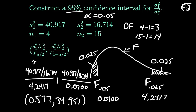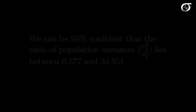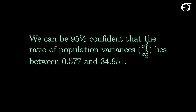You might get slightly different values depending on how much round-off error there is in your calculations. But this is a 95% confidence interval for the ratio sigma 1 squared over sigma 2 squared. In other words, we can be 95% confident that the ratio of population variances lies between the two values that we just calculated.